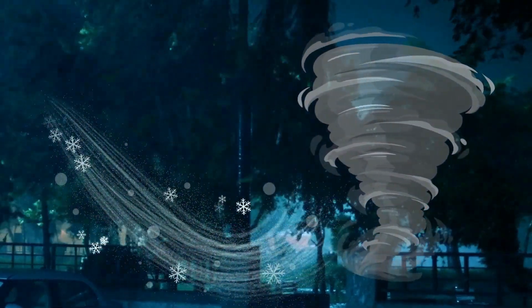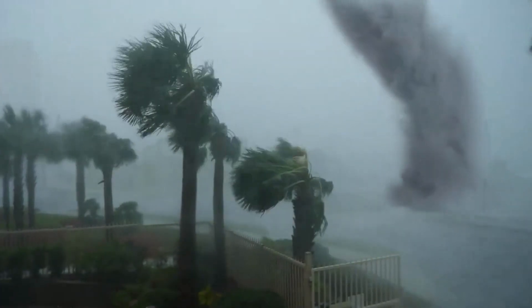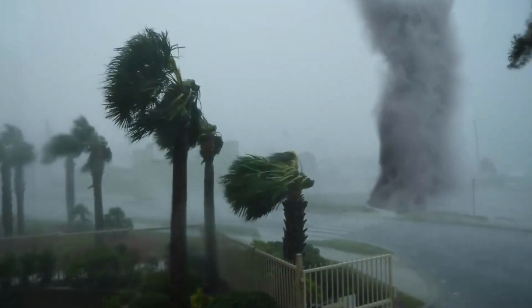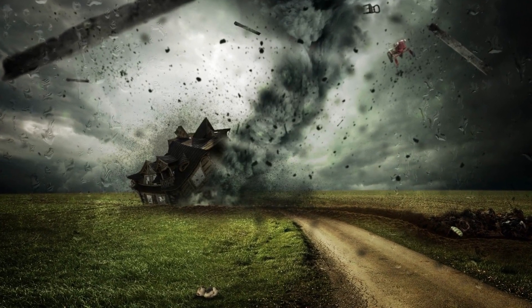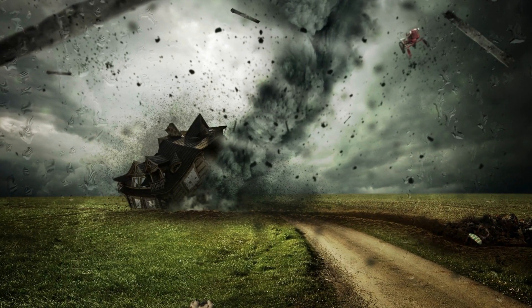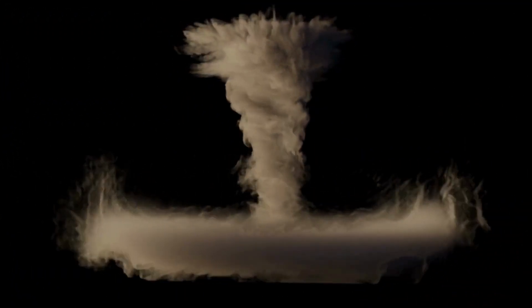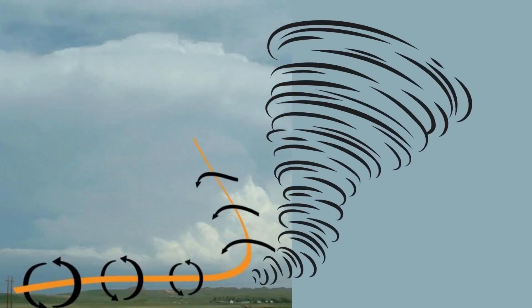We also need wind shear — a change in wind speed and direction with height. This critical factor sets the stage for the formation of the tornado's rotating column of air. As the thunderstorm intensifies, updrafts of warm air rise rapidly and the rotating column of air is stretched vertically.